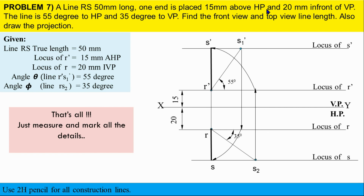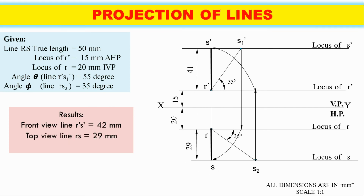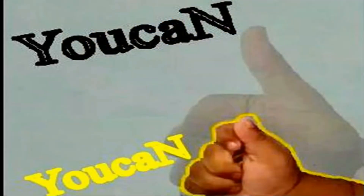After drawing the projections, they are asking for the front view line length and the top view line length — just measure and mark them. The front view line length is 41mm and the top view line length is 29mm. Finally, put a box and inside it write down the values for whatever they are asking. That's all. Thank you.